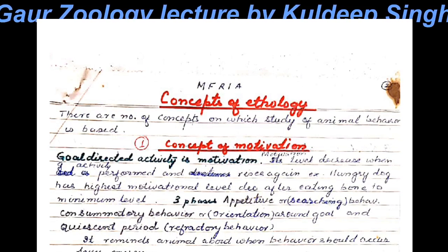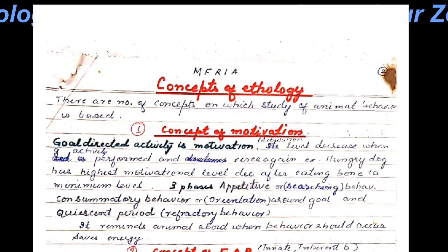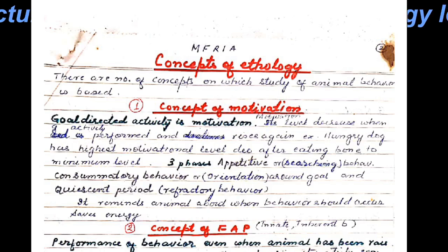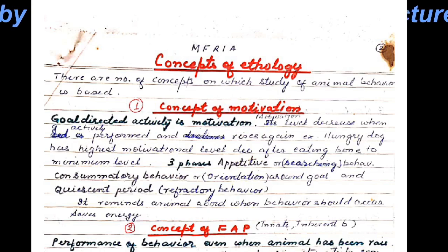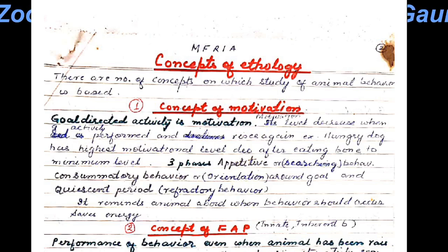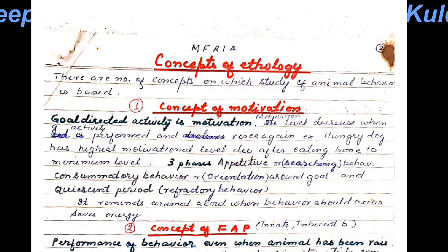Today, let us first take the concept of motivation. Motivation is the willingness to expend energy to achieve a goal or a reward — in that sense, we can define it as goal-directed activity. The motivation level tends to decrease when the activity is performed, as usually happens to all of us, but rises again after a period of inertia or inactivity. This period of inertia is called the refractory period.